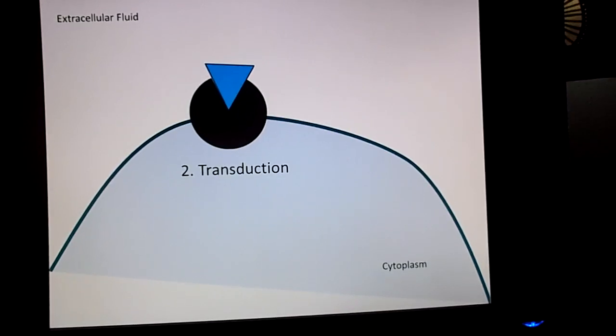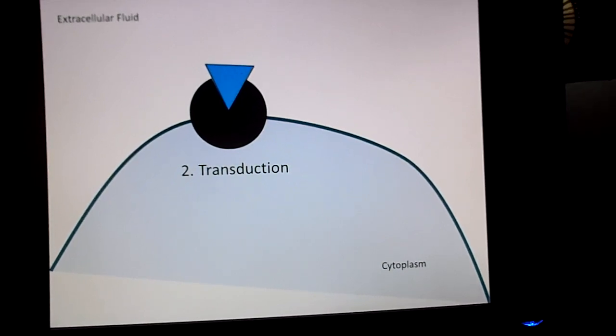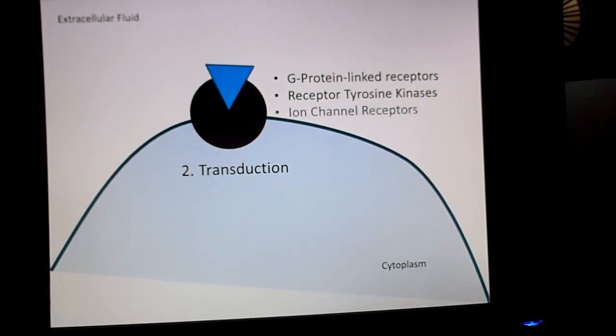Now there are three types of plasma membrane receptor proteins that we'll discuss in this chapter. We have the first one, G protein linked receptors, receptor tyrosine kinases, and also ion channel receptors. These three types of protein receptors will be discussed in another video.